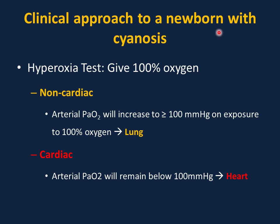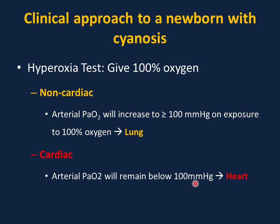The clinical approach to a newborn with cyanosis involves the hyperoxia test: give 100% oxygen, then perform arterial blood gas. In cases of non-cardiac or pulmonary causes, the arterial oxygen tension will increase to more than or equal to 100 mmHg. But if the cause is cardiac, there will be no change and it will remain below 100 mmHg — confirming a cardiac cause of cyanosis.